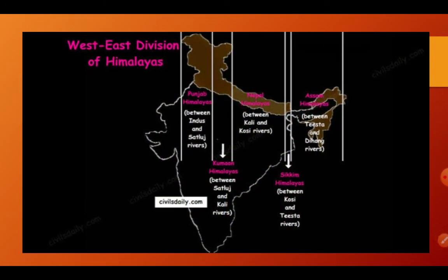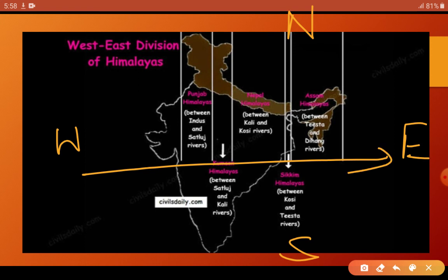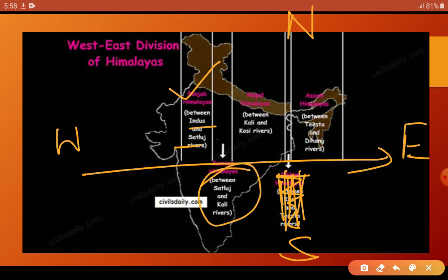There are two ways to divide the Himalayas. The first is the west-to-east division, where we divide into four categories. First is Punjab Himalaya, between the Indus and Satluj rivers. Second is Kumaon Himalaya, between the Satluj and Kali rivers. Third is Nepal Himalaya, between the Kali and Kosi rivers. Fourth is Assam Himalaya, between the Tista and Dihang rivers.